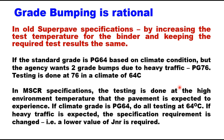In the case of the MSCR specification, binder testing is done at the high environmental temperature that the pavement is expected to experience. If the climate grade is PG 64, testing is done at 64°C, and if heavy traffic is expected, the specification requirement is changed — that is, a lower value of JNR is required. So we do not change the temperature; we change the parameter requirement. In the old specification, we kept the same result requirement (G* / sinδ = 2.2 kPa) and changed the temperature — that is the main difference in grade bumping.